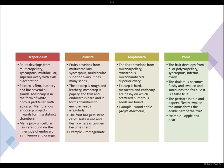Pome fruits develop from bi- or polycarpillary syncarpus inferior ovary. The thalamus or receptacle becomes fleshy and swollen and surrounds the fruit, making it a false fruit — the ovary does not develop into the edible portion, the thalamus does. The pericarp is thin and papery; the fleshy swollen thalamus forms the edible part. Examples include apple and pear.